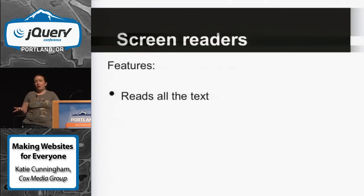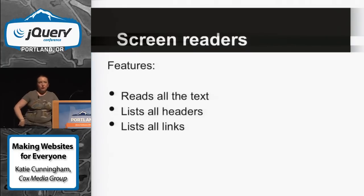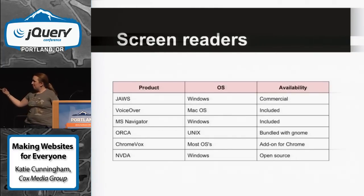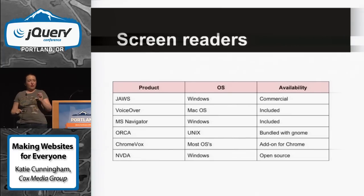Screen reader features: one thing they do is read all the text on the screen. They'll also list all of the headers or all the links on a page — that's how a user scans the page. In the same way you'd scroll quickly through a page to find what's relevant to you, they would listen to a list of headers or links. It also reads metadata — tables have metadata, images have metadata. JAWS is the commercial screen reader at about $900 for one license. But if you have a Mac, you can turn on VoiceOver with Command F5.